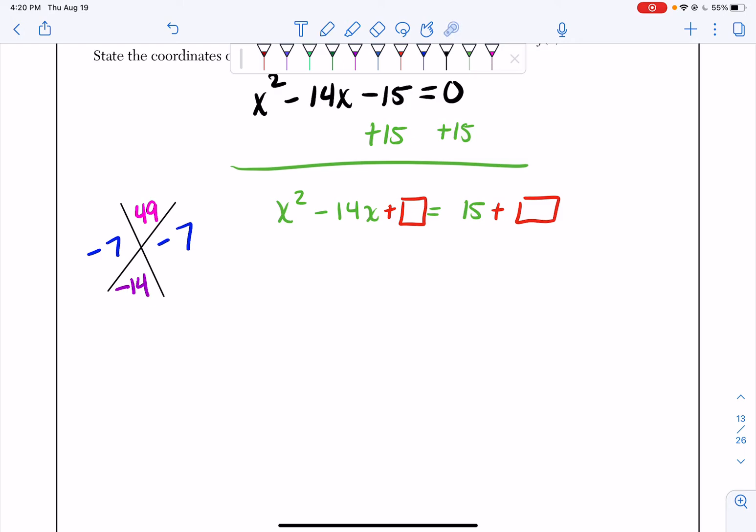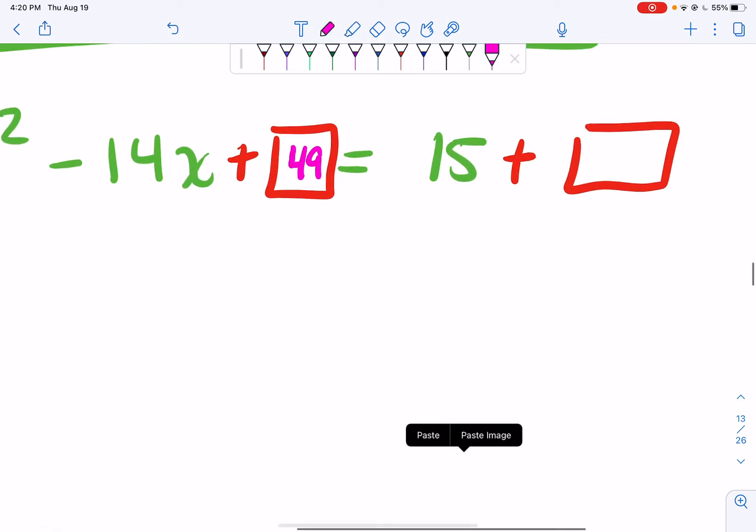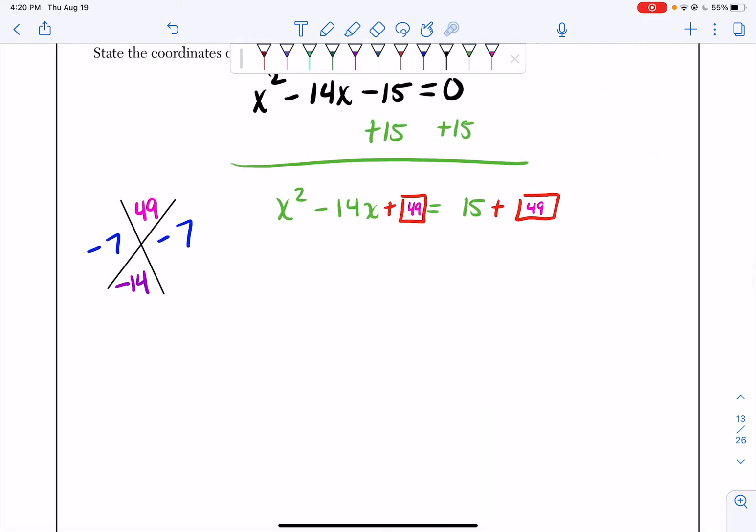And this number right here is what goes in both of my squares. So I'm going to put my 49 in both of them. And now what we're going to do is we're going to factor the left-hand side. What's nice though is that if you use the diamond correctly, these numbers will be the exact same.